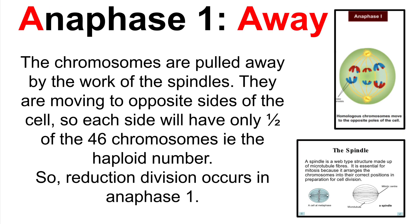Then we have anaphase one. During this phase, the chromosomes are pulled away by the work of the spindles — they are moving to opposite sides of the cell. Each side will only have one half of the 46 chromosomes, which means it is the haploid number, so reduction division occurs in anaphase one. For easy memorization, remember that the A in anaphase stands for away, which is where chromosomes are pulled by the spindles away from the cell center to opposite ends.